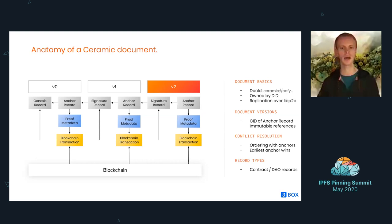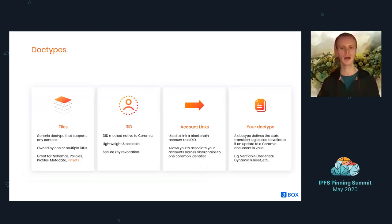In Ceramic, there's the concept of document types or doc types. We've created three standard ones, but you can add more. First, there are tiles — a very generic type where you can store any type of JSON data, owned and controlled by a DID. You can use them to store schemas, policies, profiles, general metadata, and for this talk, pinsets. 3ID is the DID method native to Ceramic — quite lightweight and possibly the most scalable DID method because of how Ceramic documents are structured. It has built-in secure key revocation. 3box was actually the use case we built the Ceramic protocol for, and then generalized it.